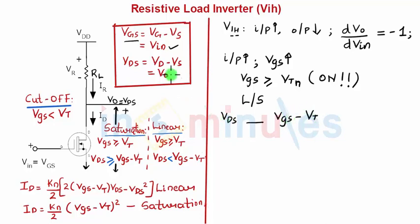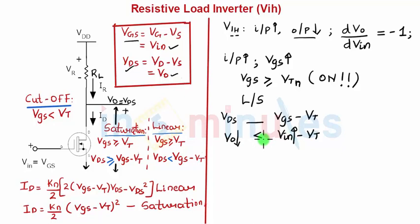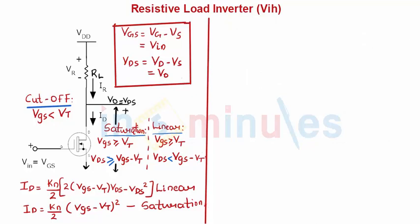VDS is nothing but the output voltage, and VGS is nothing but the input voltage. Since Vout is low and Vin is high, the sign is 'less than,' which shows that the transistor is operating in the linear region. So what remains is to equate the NMOS current in the linear region to the current flowing through the resistor.